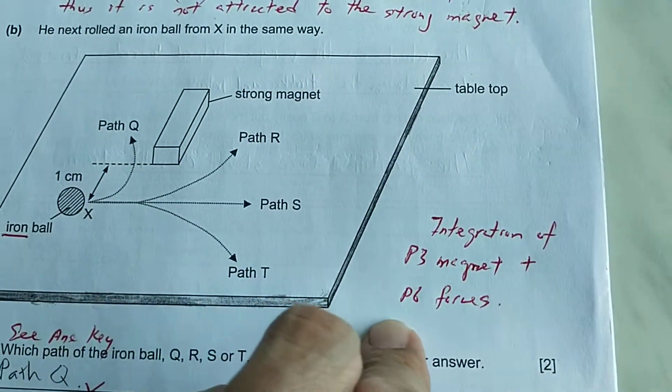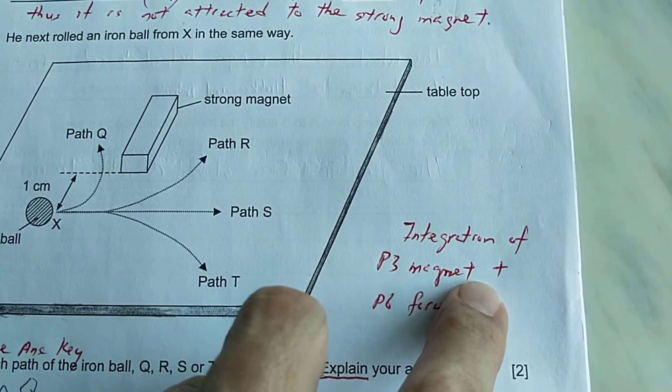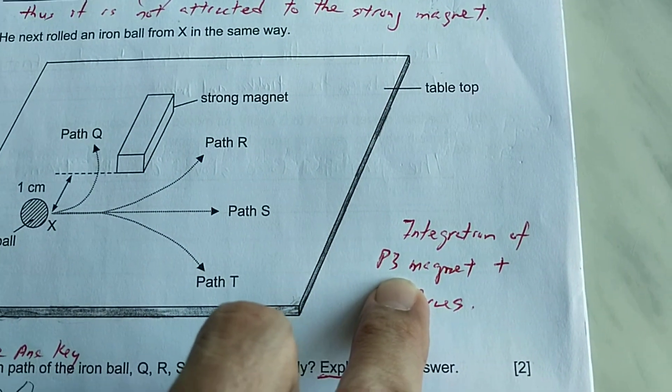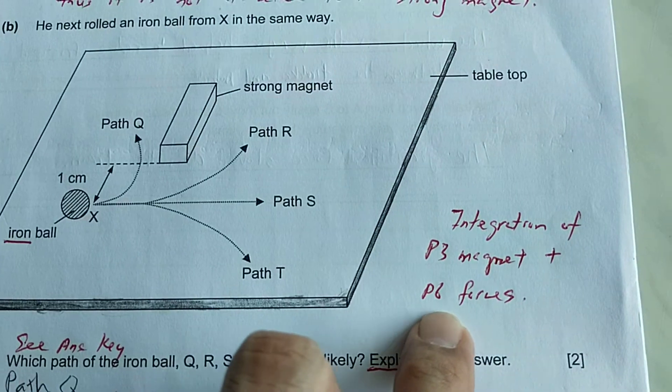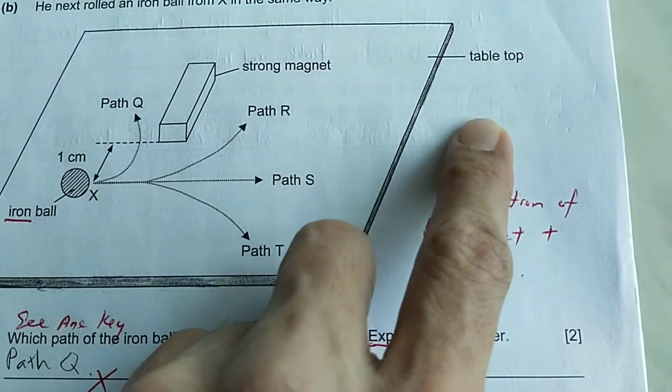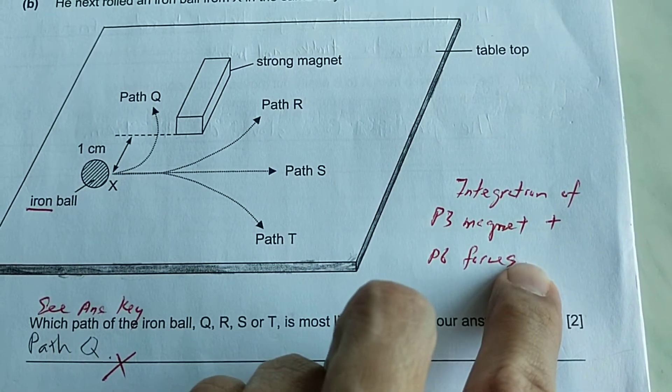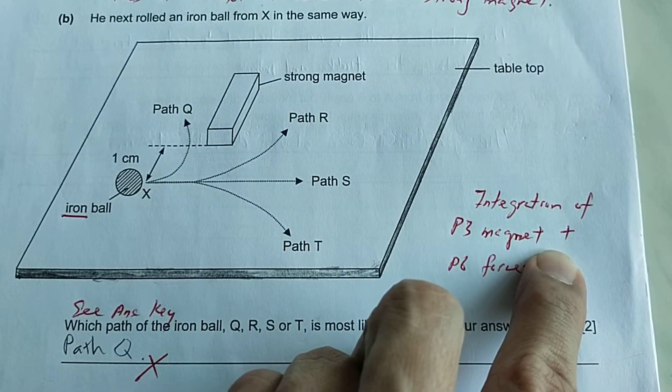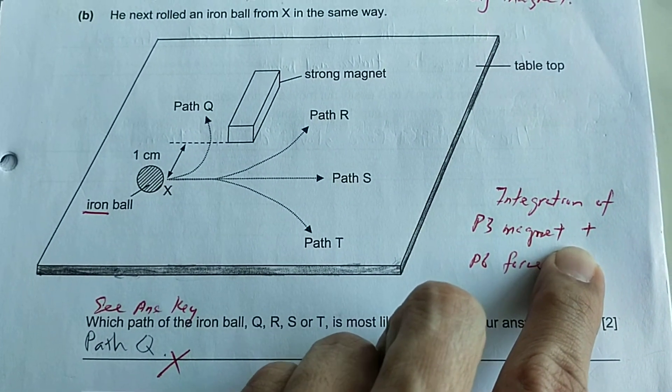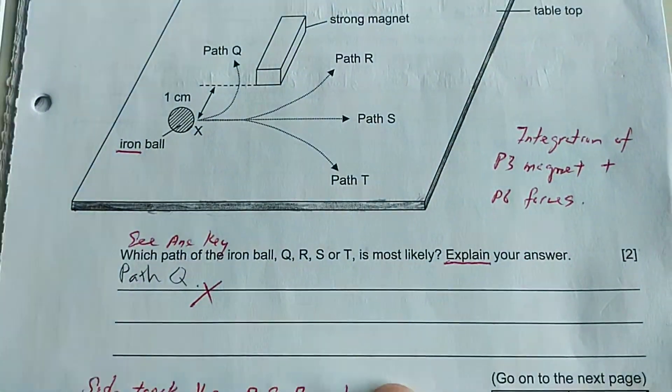So can you see here there's an integration of P3 magnetic topics, or P4 - some schools teach in P4 but most schools teach magnetic in P3 - and an integration of P6 forces. So there's an integration of P3 and P6 topic, just like in the SAF we have the integration of the tri-service operations of the Navy, Army and the Air Force.